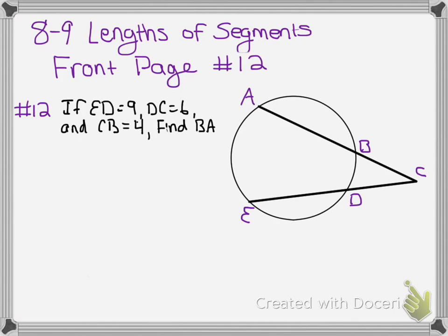So first I'm going to label everything that I know. ED is 9, DC is 6, CB is 4, BA is X.